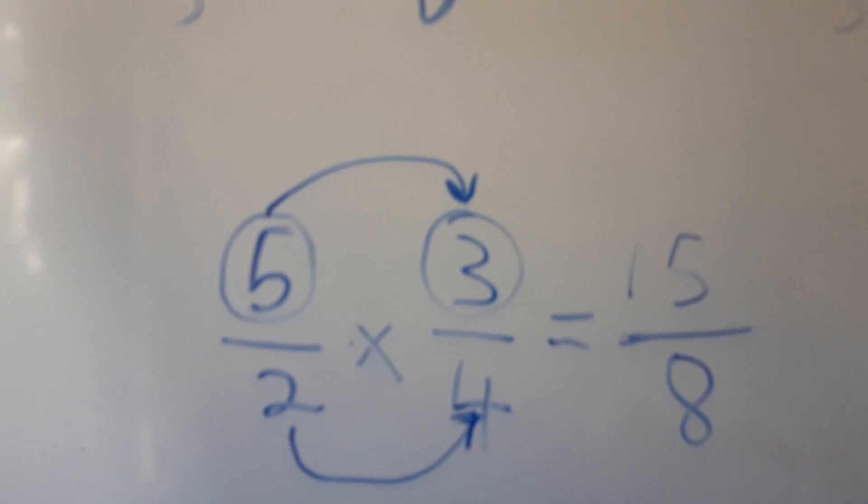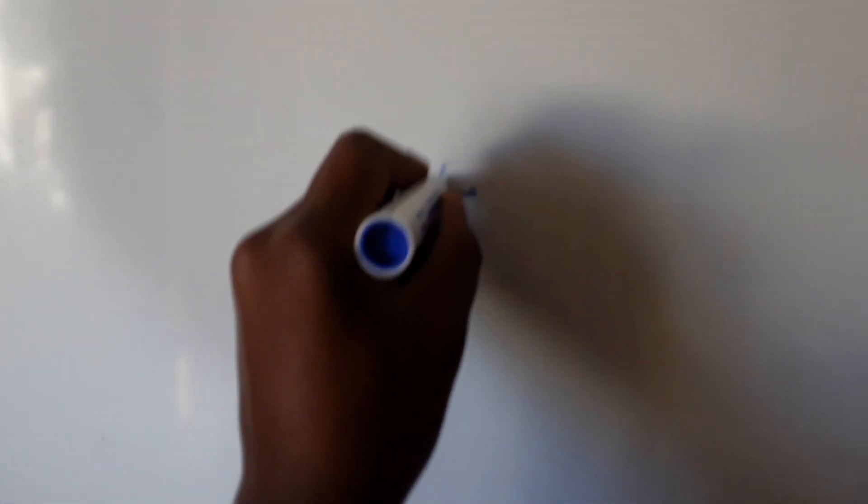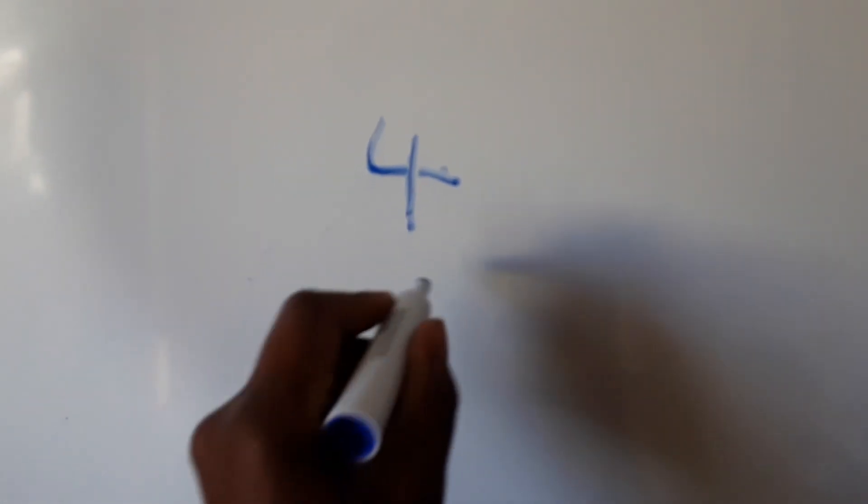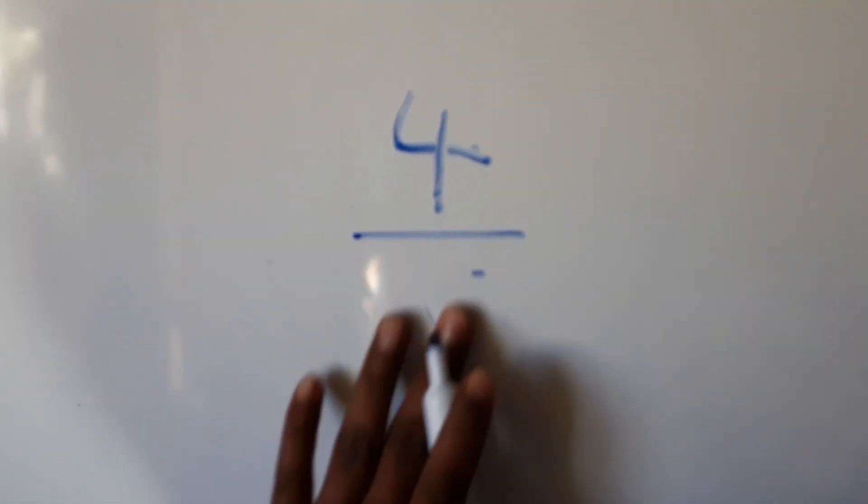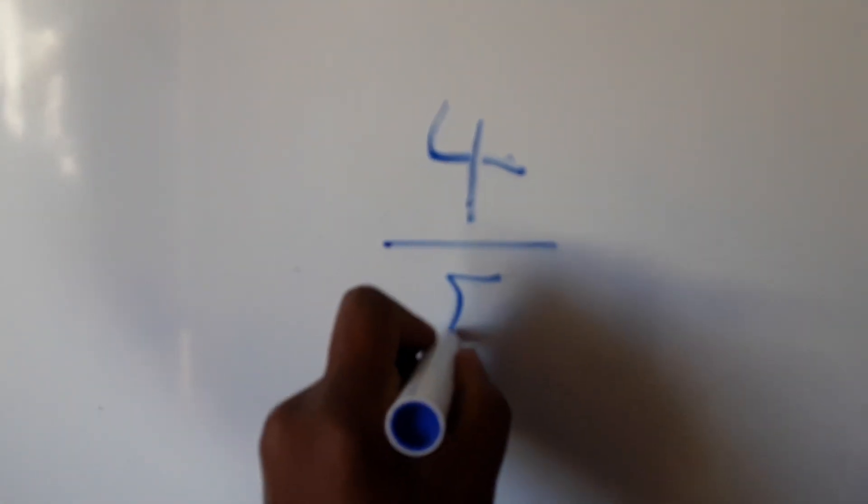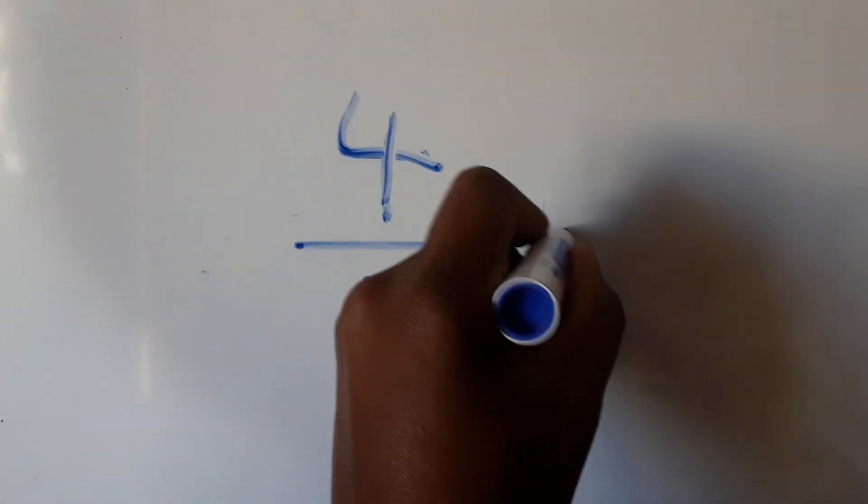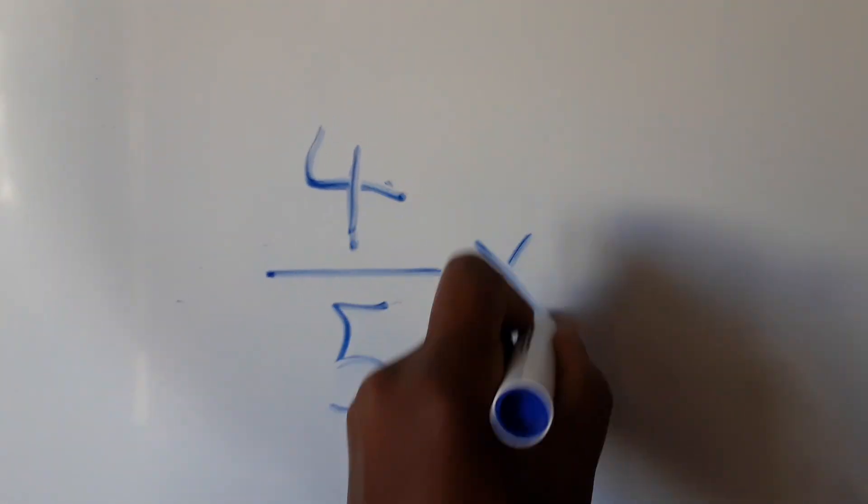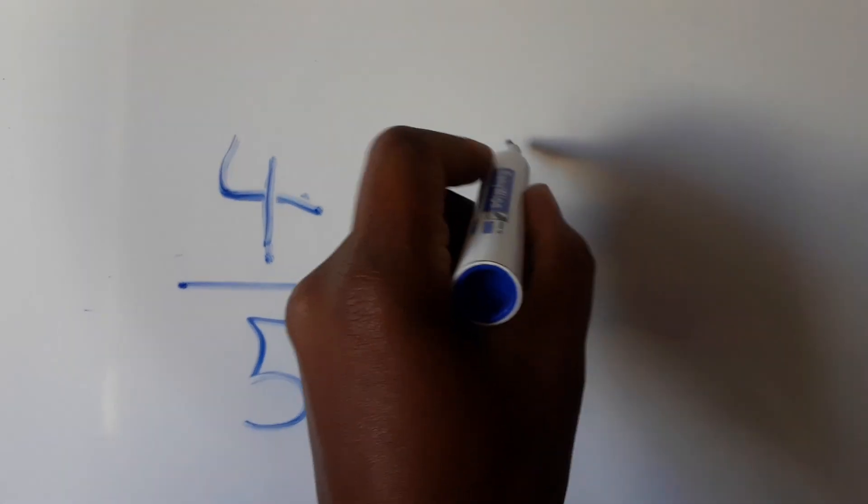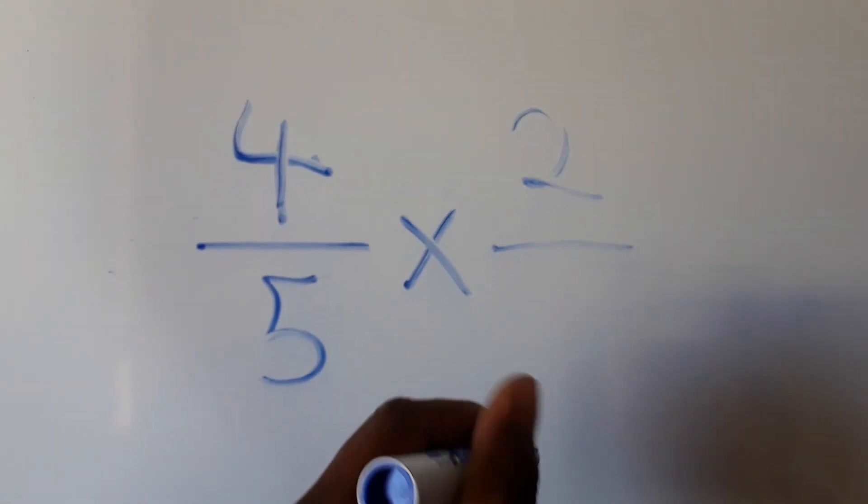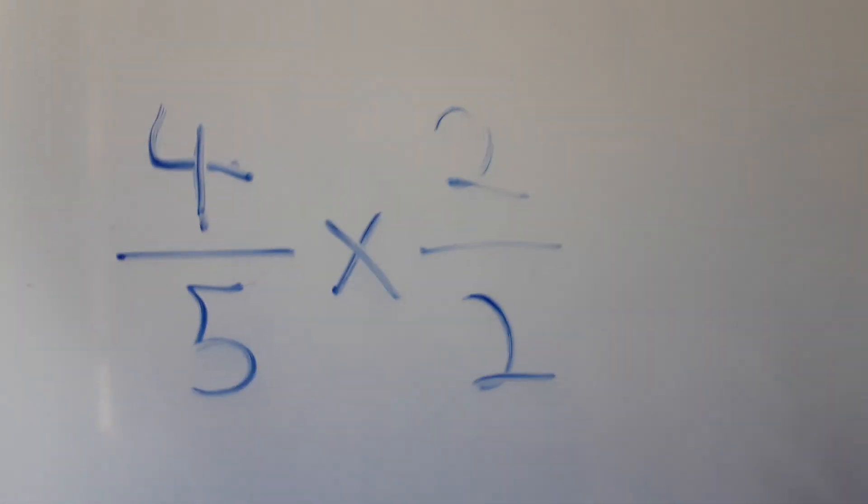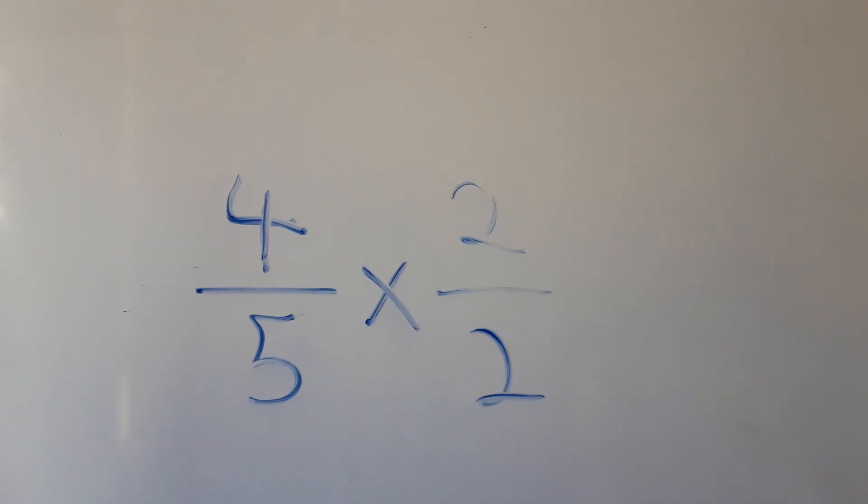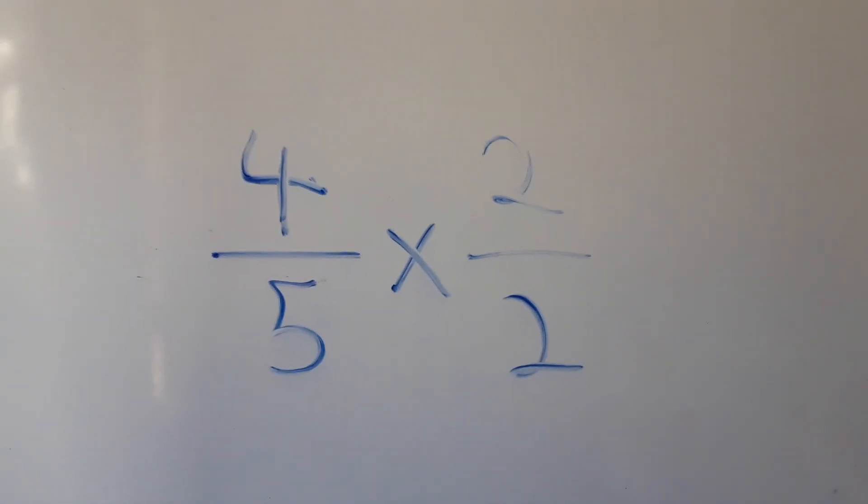One last example and we're done for today's lesson. We have 4 over 5 times 2 over 2.